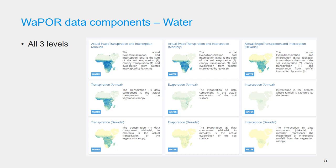The water data components include evaporation, transpiration, interception, and the sum of these three. These components are available at all three levels with decadal and annual temporal resolution. In addition, monthly actual evapotranspiration and interception is also available.